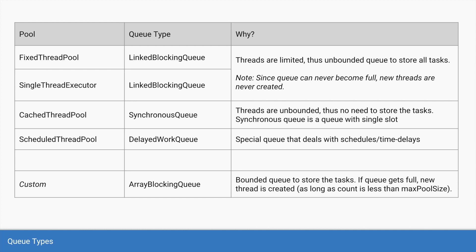For the scheduled thread pool, we have a special kind of queue called a delayed work queue. We need this because the scheduled thread pool deals with schedules or time-based execution of tasks. The delayed work queue returns tasks based on whether their scheduled time has passed or not.